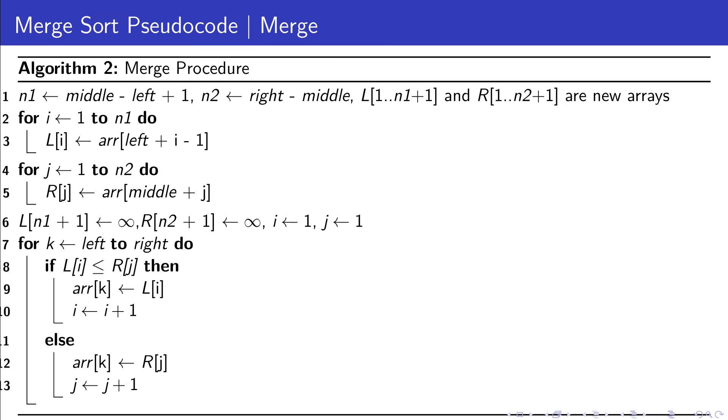During our main merging process, for each step, we choose the smallest item from L or R and add it to our resulting list. Each time we pick an item, we move our pointer in that helper list forward. We continue this process until both L and R are left with only the infinity marker. It's worth noting that instead of the infinity marker, we could simply track our position in each list to know when we've processed all items.